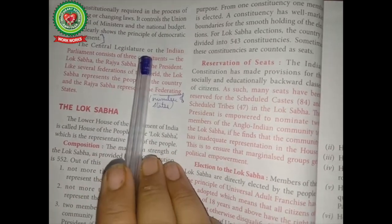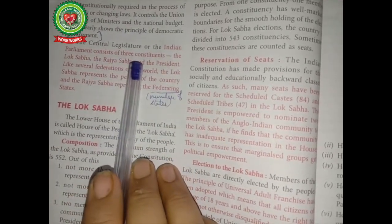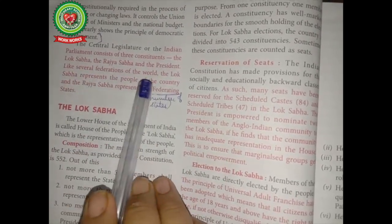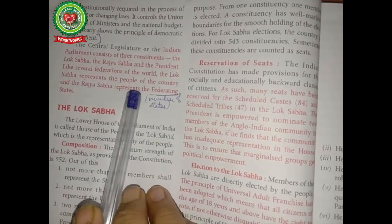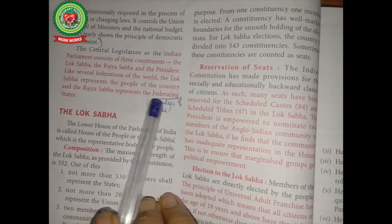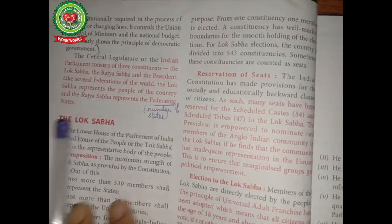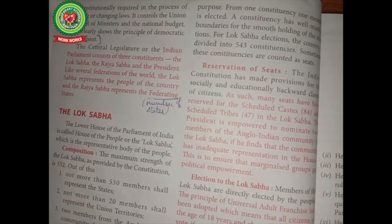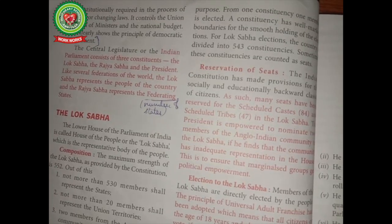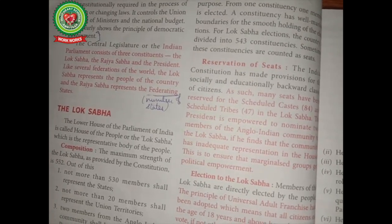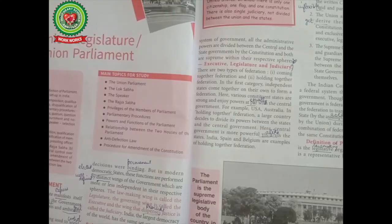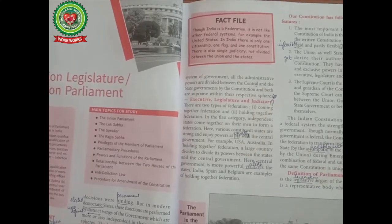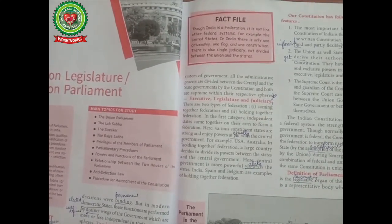The central legislature, or the Indian Parliament, consists of three constituents: the Lok Sabha, the Rajya Sabha, and the President. Like several federations of the world, the Lok Sabha represents the people of the country and the Rajya Sabha represents the federating — meaning number of — states. In this topic we have discussed how India's federal system is different from that of the United States.